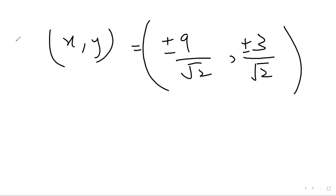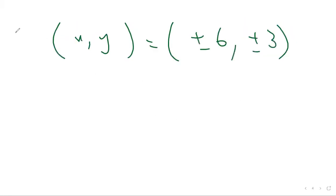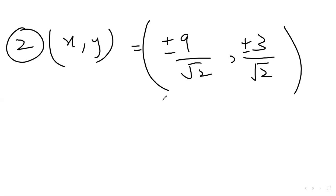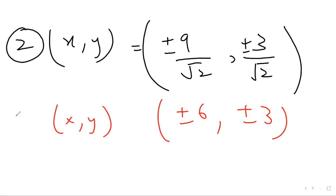So we have two complete solutions. The first solution is (±6, ±3) and the second solution is (±9/√2, ±3/√2).